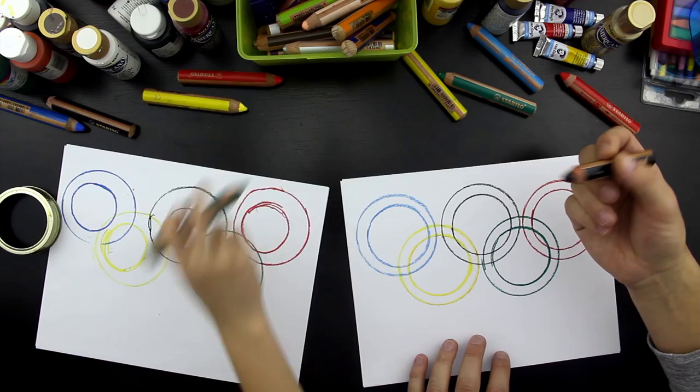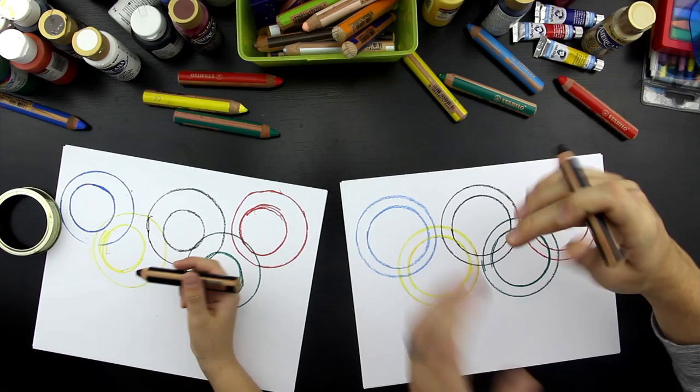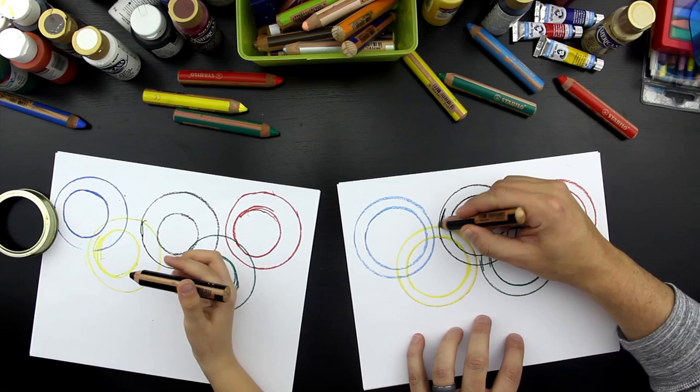So, we're going to start with black. We're going to go back to black. And we need to make these rings look like they're interlocking, like they're connected. And so, go ahead and color in, and we're going to not color in through the yellow. We're just going to color up to the yellow.